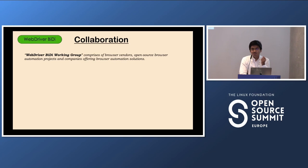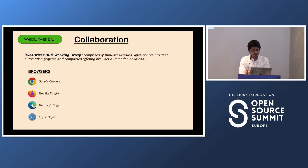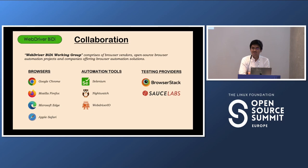This work is not done by a single party — it is a collaboration between many partners, including browser vendors, open-source browser automation projects, and companies offering browser automation solutions. Browser vendors include Google Chrome, Mozilla Firefox, Microsoft Edge, and Apple Safari. Automation projects include Selenium, Nightwatch, and WebDriverIO, and companies include BrowserStack and Sauce Labs. All these stakeholders work together to bring out a simple and unified WebDriver solution for testers that is easy to implement in their respective tools.